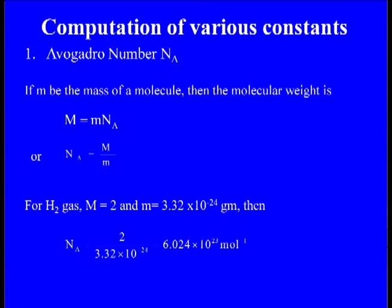We can calculate various constants using kinetic theory. First, Avogadro's number — the number of atoms or molecules in one gram mole of gas. If m is the mass of a molecule, the molecular weight is capital M = small m × Nₐ, so Nₐ = M/m. For hydrogen gas, the molecular weight M = 2 and the mass of a hydrogen molecule m = 3.32 × 10⁻²⁴ g. Therefore Nₐ = 2 / (3.32 × 10⁻²⁴) = 6.024 × 10²³ particles per mole.